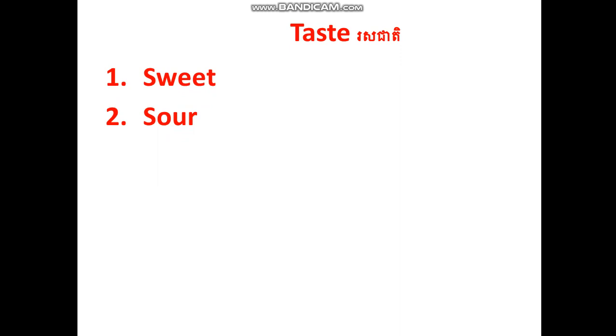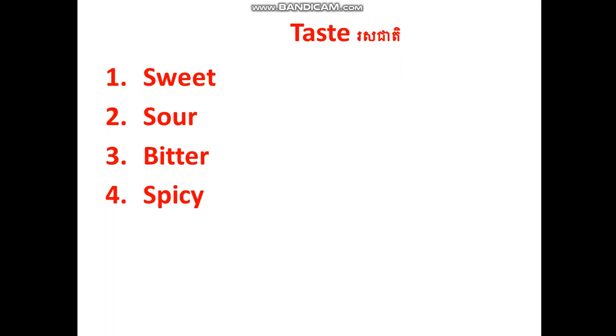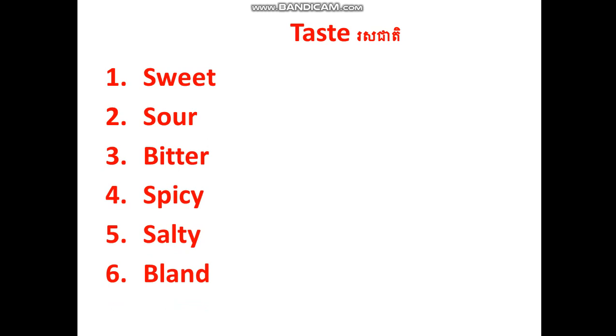What are the tastes? First, please read after teacher. Sweet. Again — sweet. And number two, read all together: sour. Again — sour. Good. And number three, read all together: bitter. Again — bitter. Very good. And number four, all together: spicy. Again — spicy. Very good. And number five, all together: salty. Again — salty. Very good. And number six: bland. Again — bland.